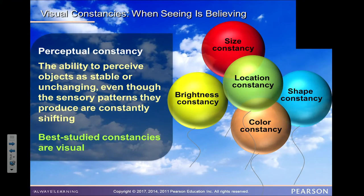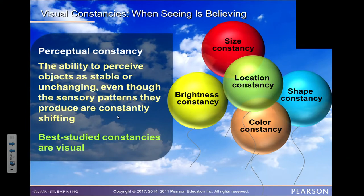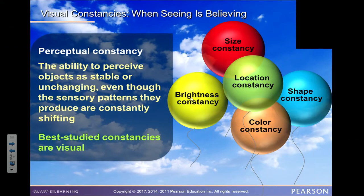Perceptual constancy is the ability to perceive objects as stable or unchanging even though the sensory patterns they produce are constantly shifting. The best-studied constancies are visual. We perceive something as constant in terms of its brightness, size, location, shape, and color.